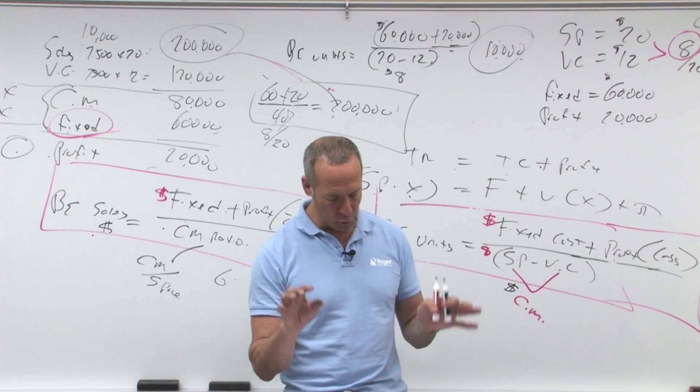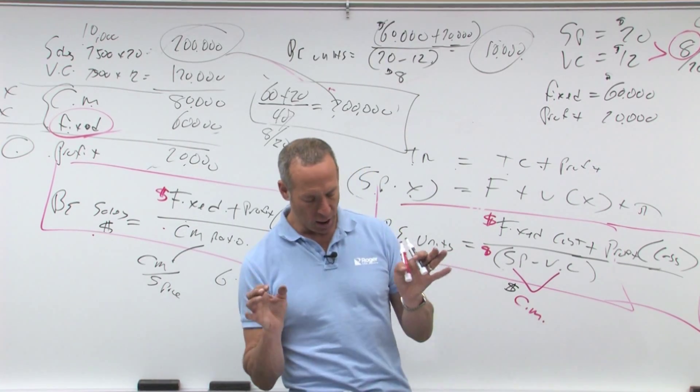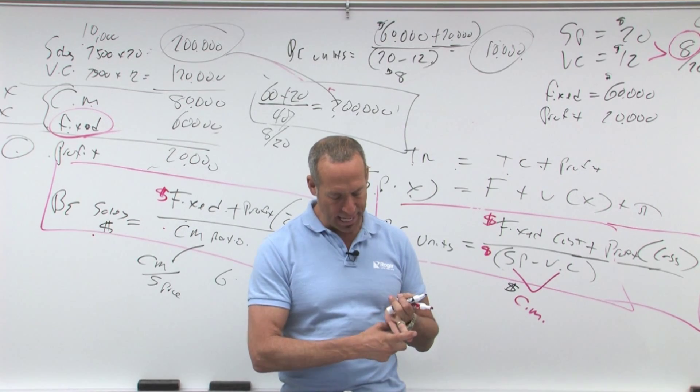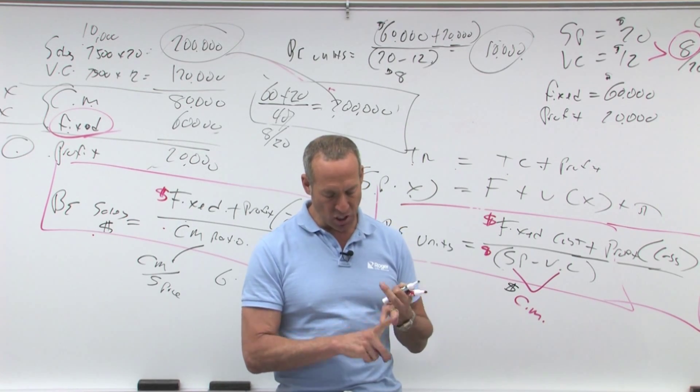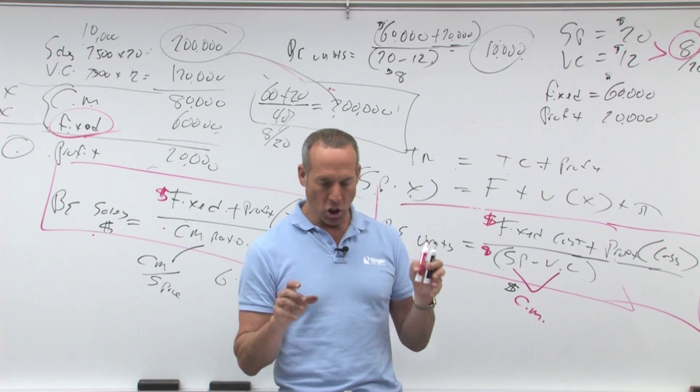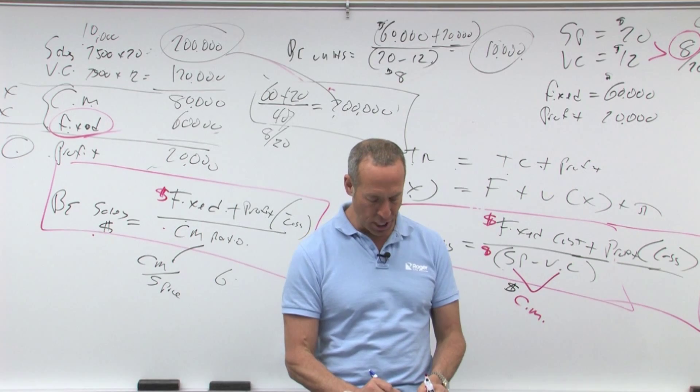All right, so now we've got to come up with our... Let's kind of see here. They're saying fixed costs are 100, breakeven is 800, so that means breakeven sales is 800. So what we need to do is come up with our CM ratio. So if we come up with our CM ratio,